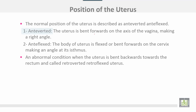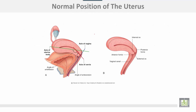The normal position of the uterus is described as anteverted and anteflexed. Anteverted means the uterus is bent forwards, making a right angle with the axis of the vagina. Anteflexed means the body of the uterus is flexed or bent forwards on the cervix. In abnormal conditions, when the uterus is bent backwards toward the rectum, it is called retroverted and retroflexed. This diagram shows the angle between the uterus and vagina (anteversion) and the angle between the body and cervix (anteflexion).